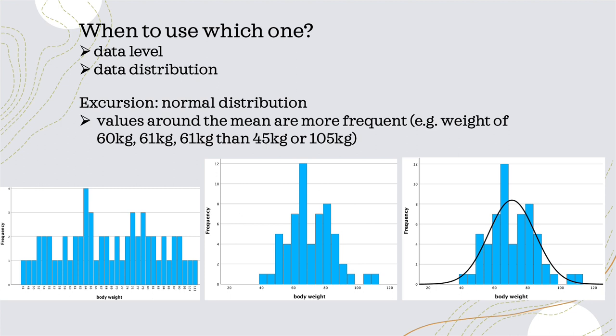With that grouping, the distribution of our data becomes visible. In the case of a normal distribution, the closer we come to the mean, the more values will fall into the grouping interval close to the mean — and thus the frequency will be high. Values around the mean are more frequent.